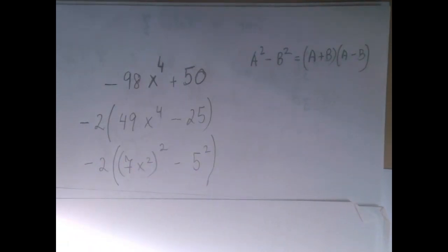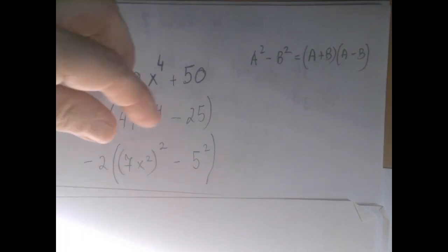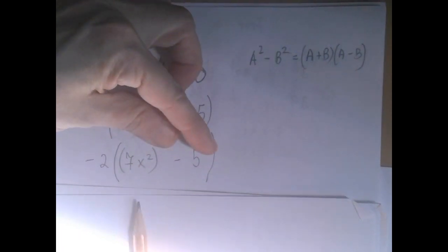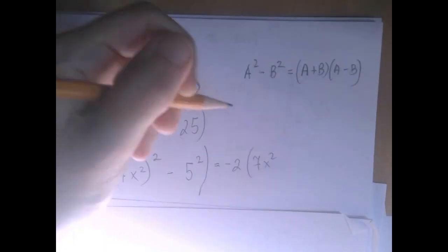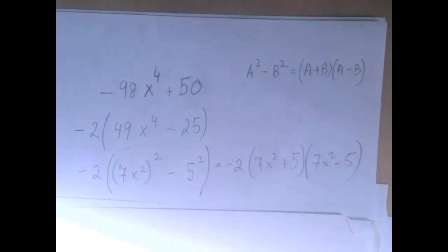This expression can be factored into a pair of conjugates where we add and subtract 7x squared and 5. So it's negative 2 times 7x squared plus 5 times 7x squared minus 5.